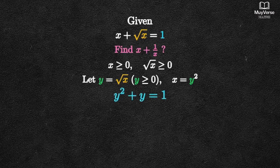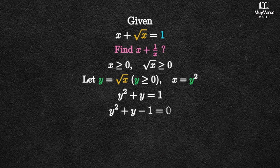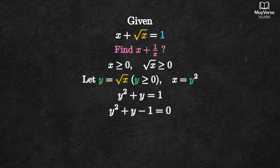Now rewrite the original equation: x plus square root of x equals 1 becomes y squared plus y equals 1. Move everything to one side to get y squared plus y minus 1 equals 0, a quadratic in y.